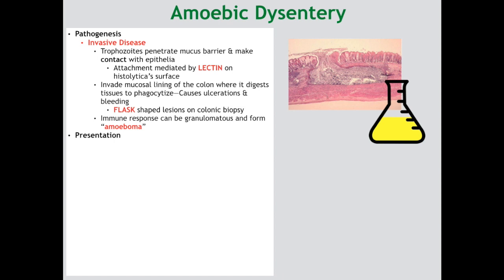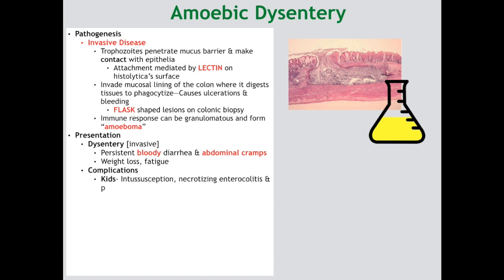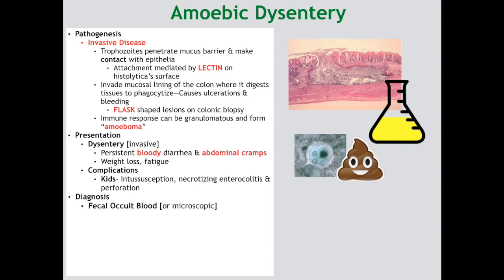The clinical presentation for dysentery is marked by persistent bloody diarrhea and severe abdominal cramping, which makes it unique compared to the other two presentations. This can be accompanied by weight loss and fatigue. The complications are important to know: especially in kids — who are at the extremes of age — there is risk for intussusception, necrotizing enterocolitis, and perforation, with perforation presenting as an acute abdomen. For diagnosis, besides stool O&P, you will observe fecal occult blood, and on biopsy remember the flask-shaped lesions in the colonic mucosa.